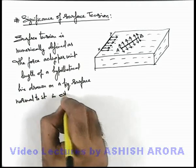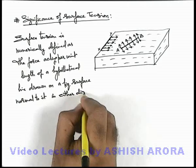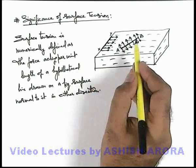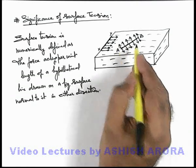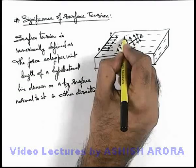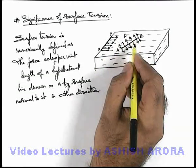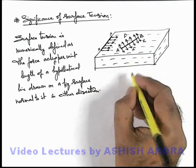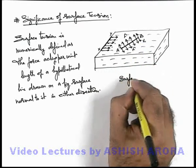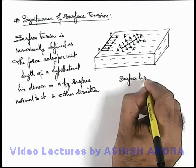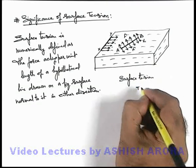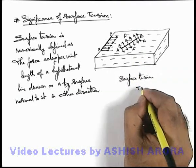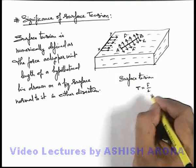The force acts normal to the line, in either direction. If a hypothetical line is drawn, it experiences a net force F on the two sides, and if its length is L, then the surface tension of the liquid can be given as T, where T is the symbol we use to denote surface tension. It can be given as T equals F upon L.